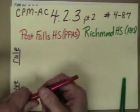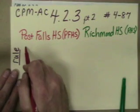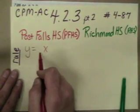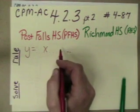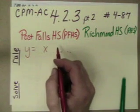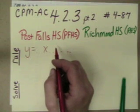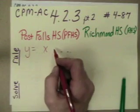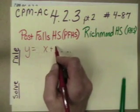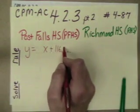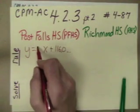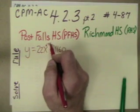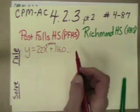So let's see. Post Falls High School, if I'm going to write a rule, it's going to be y equals something x something. Post Falls Idaho has 1,160 students and is growing by 22 students per year. Well, I know this is my starting point. It's 1,160 students and it's growing by 22 students a year. So I know that x's are measured in years.